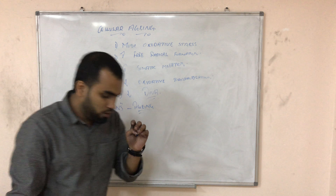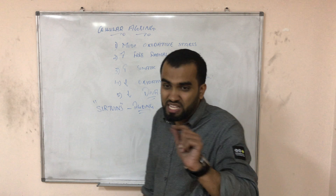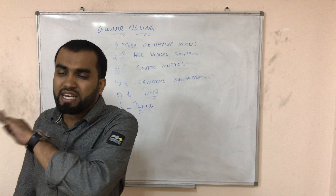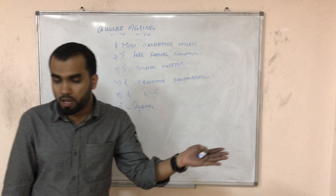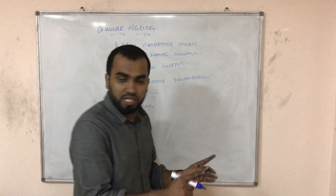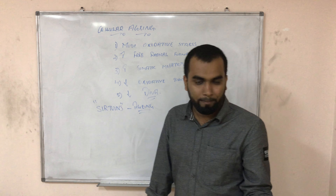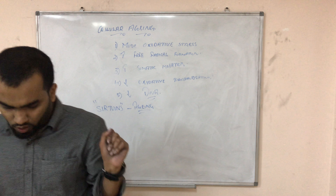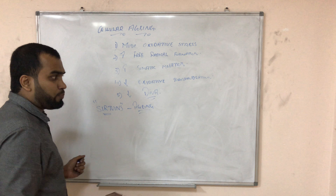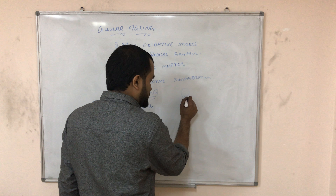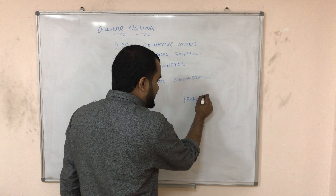Many film actors around the world look very young because they follow a very strict diet. You can never reverse aging but you can prolong it. That is why they follow strict calorie restriction — the less you eat, the more you live. There is also a condition called progeria.